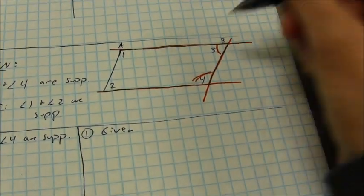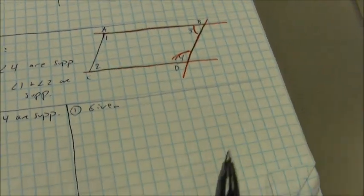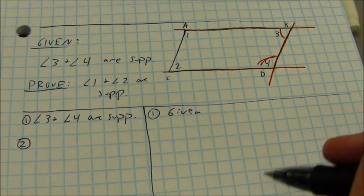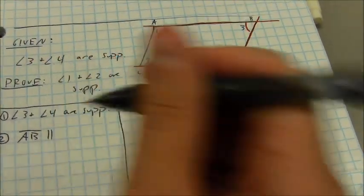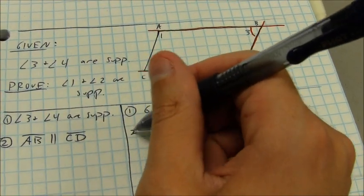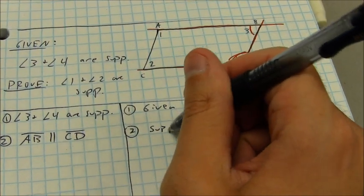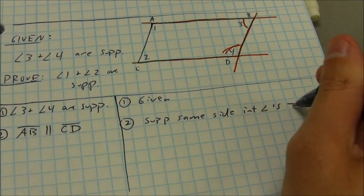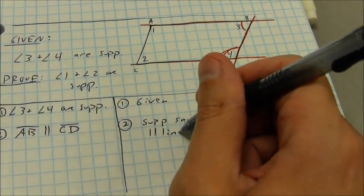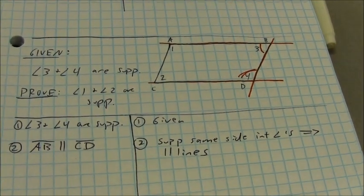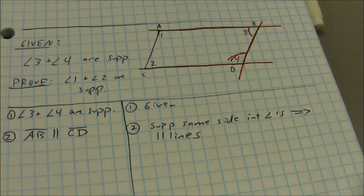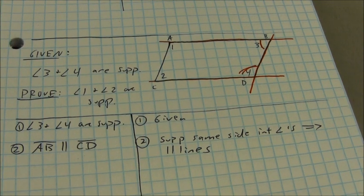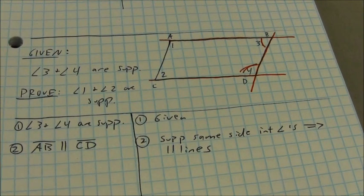I'm going to name these lines A, B, C, and D so I can reference them in my proof. So in step 2, I can immediately say that AB is parallel to CD, and the reason is: supplementary same-side interior angles implies parallel lines. The converse of that statement also works — if I have parallel lines, then any same-side interior angles formed by those lines will be supplementary as well.